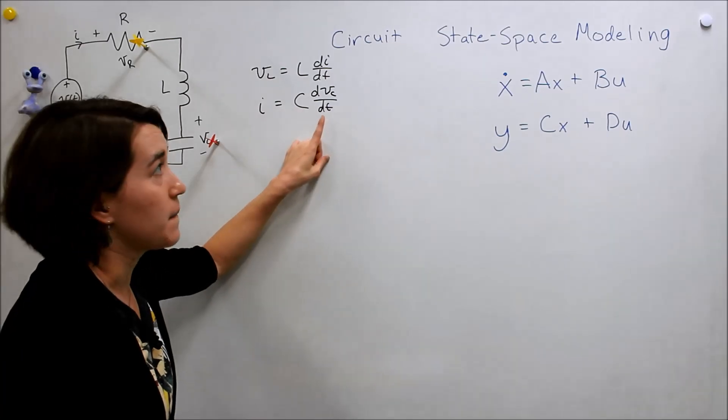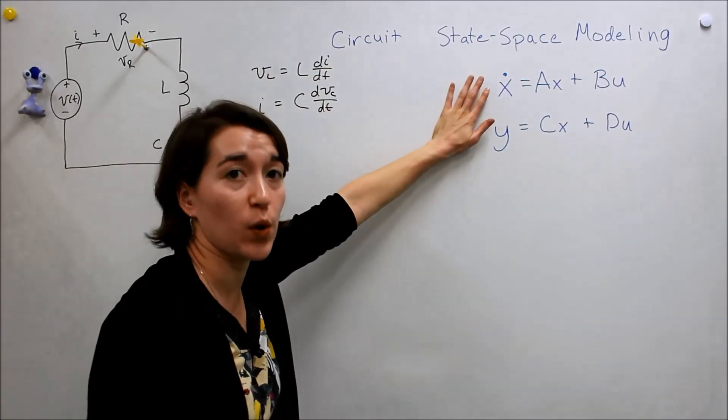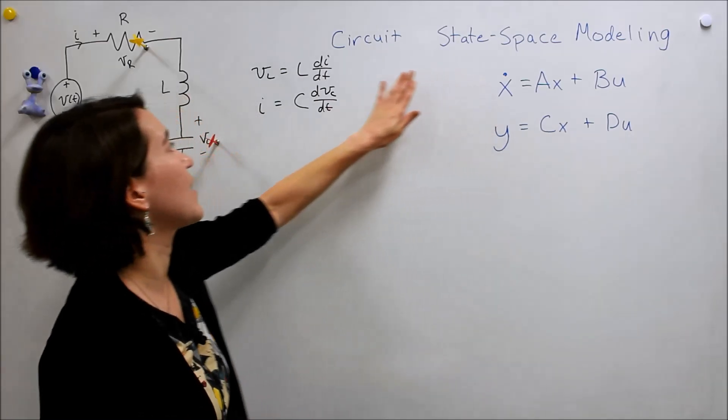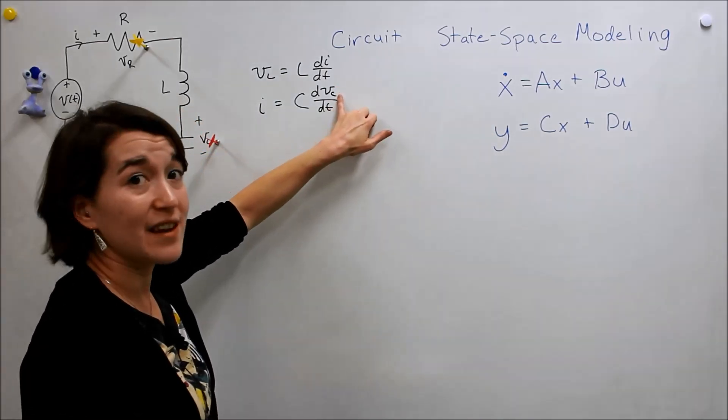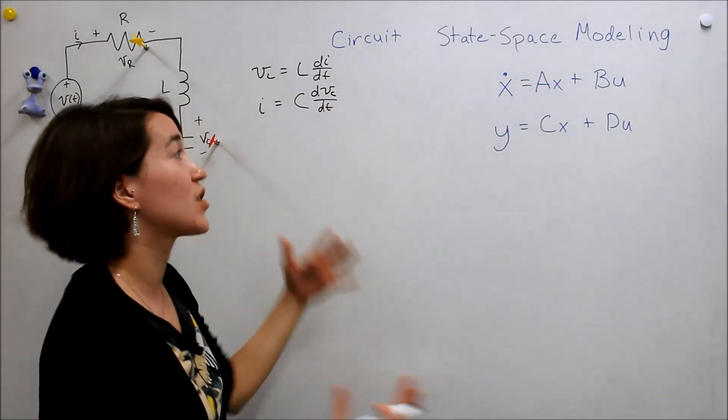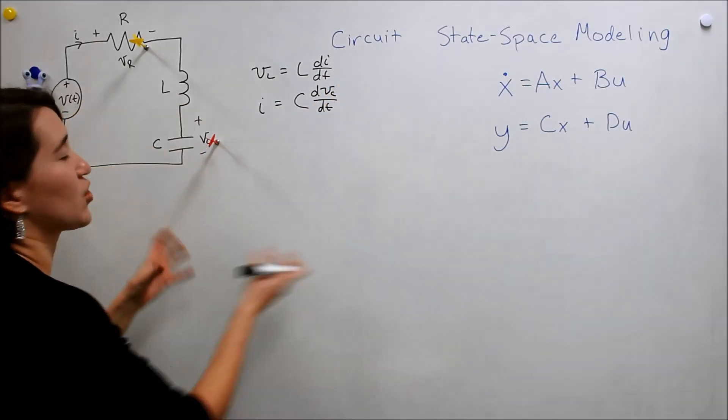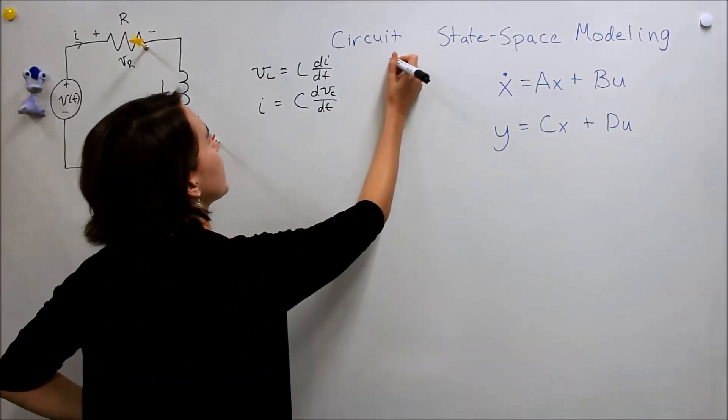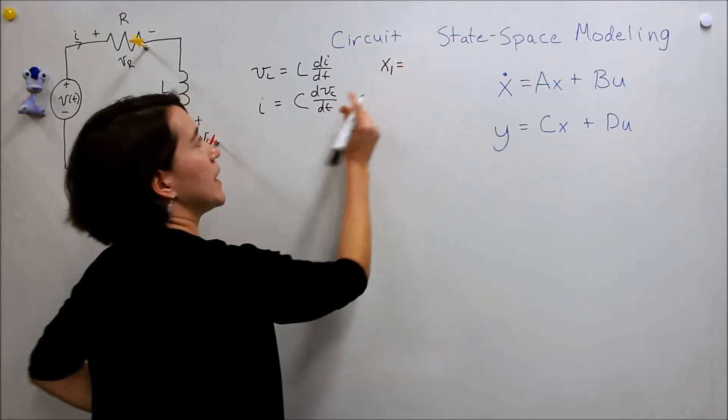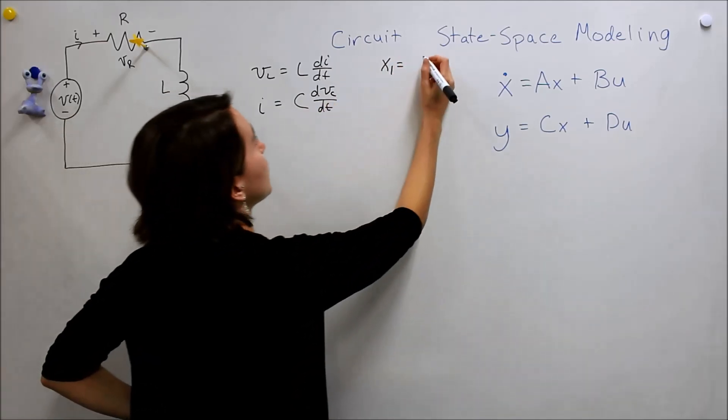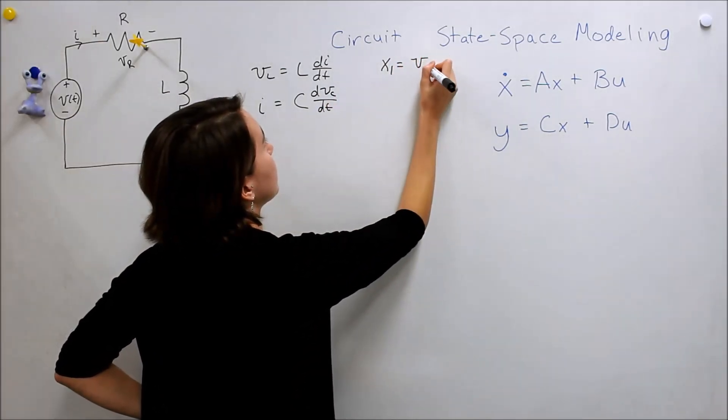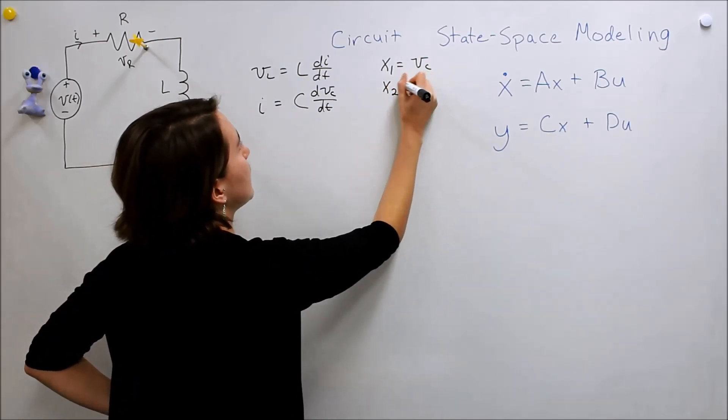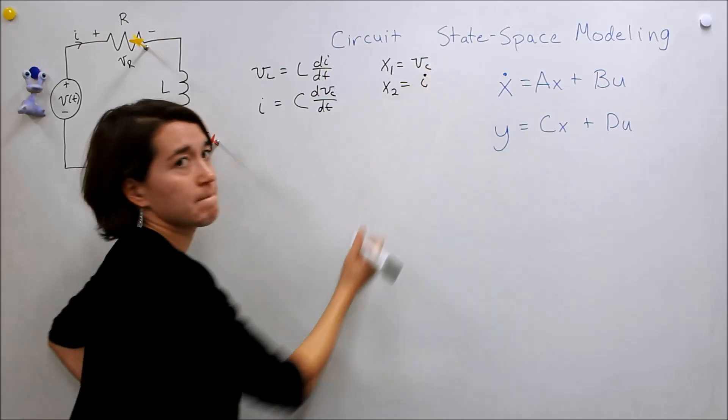We want to find a derivative equation for each of these, so it makes sense that we name our states to be VC and I. You get to choose which states, but you have to make sure you're capturing all of the dynamics in the system. So in this case, we'll say X1 is equal to this capacitor voltage VC, and we're going to call X2, I.